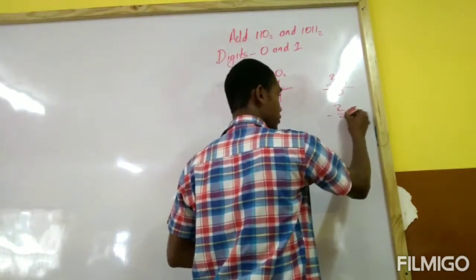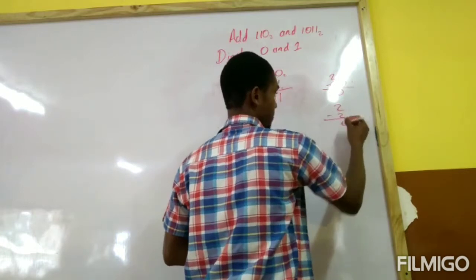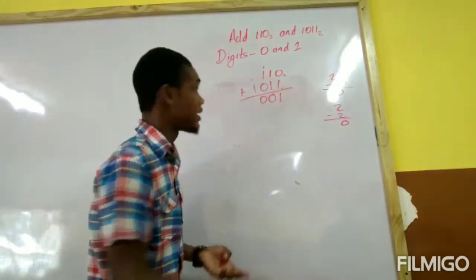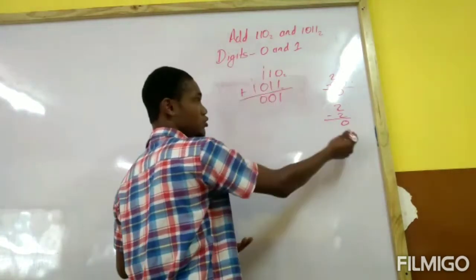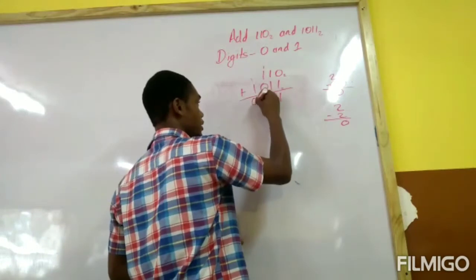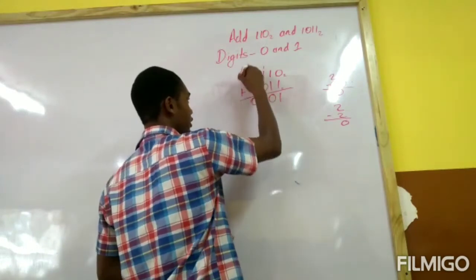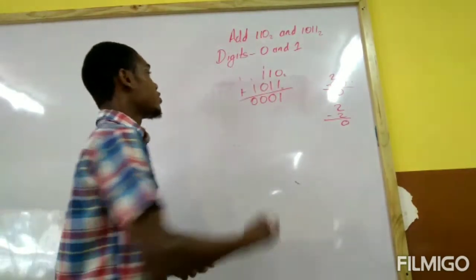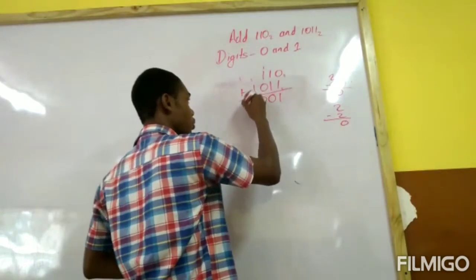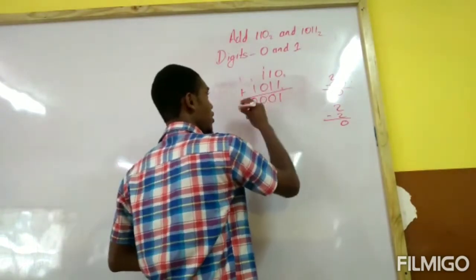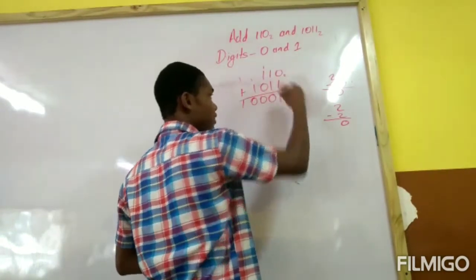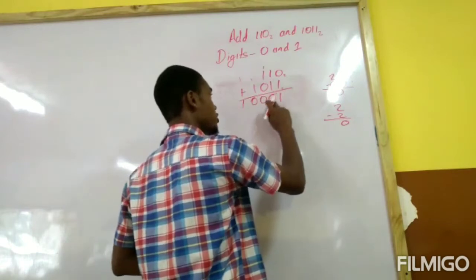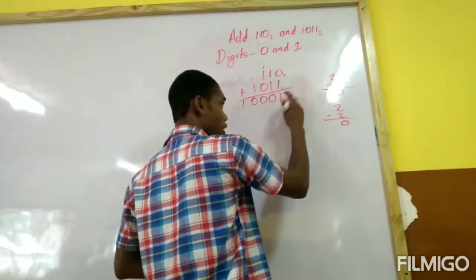Zero plus one plus one is two again, so you do the same thing — put zero and carry one. Same thing: one and one is two, so you put a zero and carry one. But because there is nothing else to be added, you simply bring down the one. So when you add this number in binary, the answer is 1 0 0 0 1.